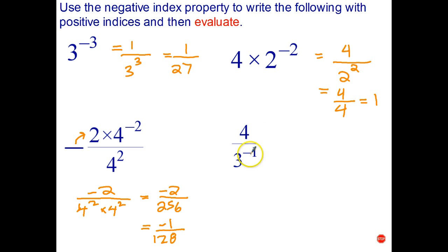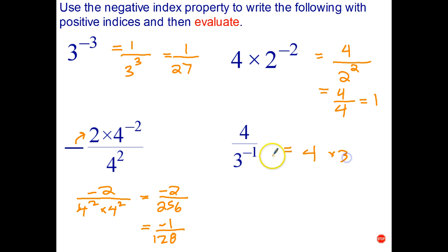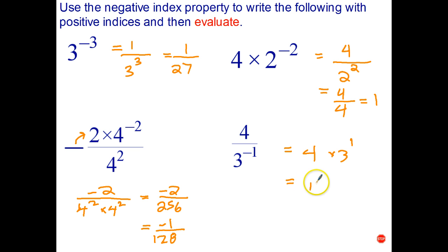And the last one: 4 stays on top, the 3 goes to the top as well, and the sign changes from negative to positive. And 4 times 3 is 12.